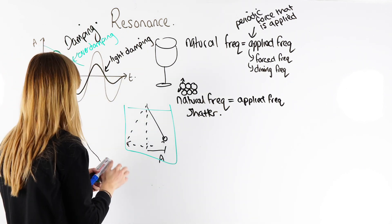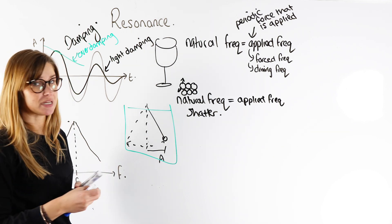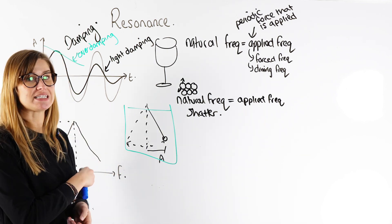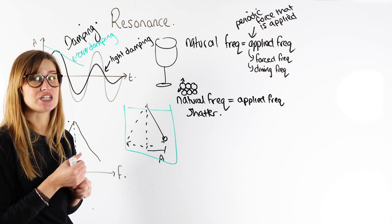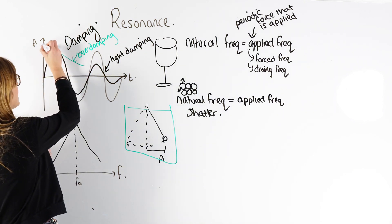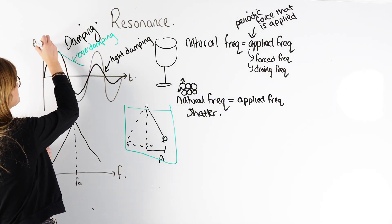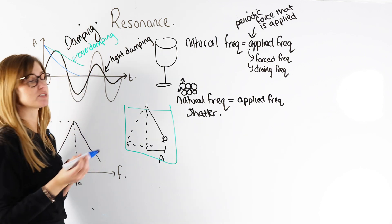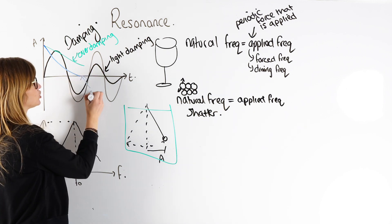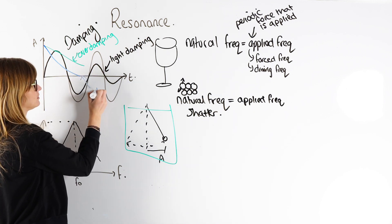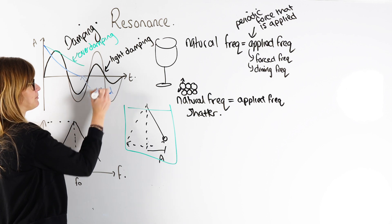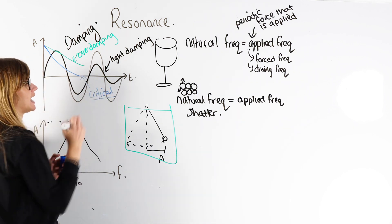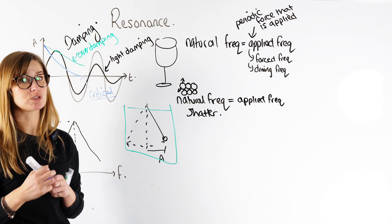The other one you need to know about is critical dampening. Critical dampening is when you want the system to return to its equilibrium position as quickly as possible. So if we start at maximum amplitude, critical dampening means it returns to its equilibrium position as fast as possible.